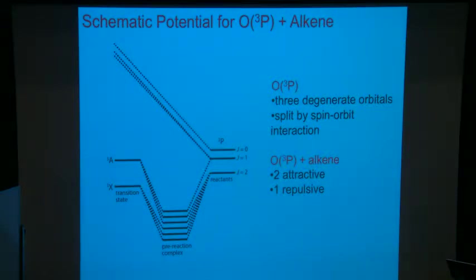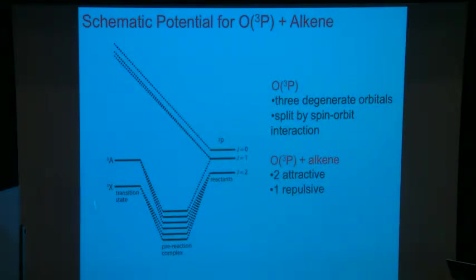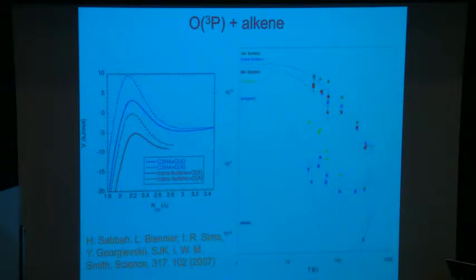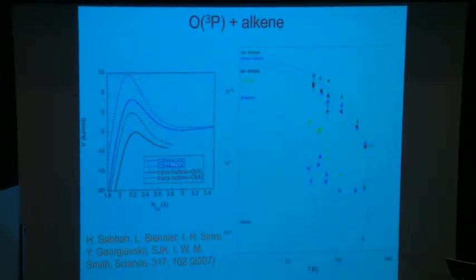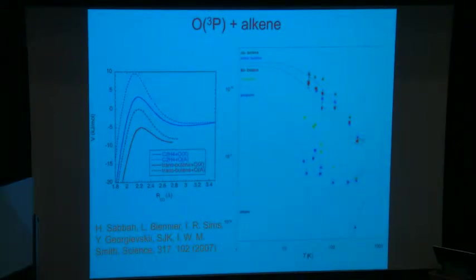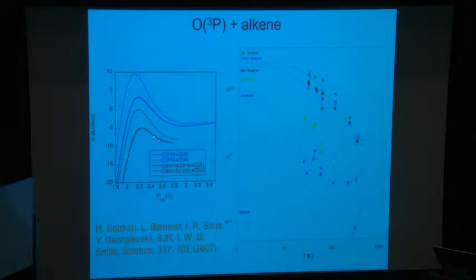We've got one X-state triplet (X in chemistry means ground state), an A-state as the first one above ground, and then the repulsive triplet. You have to account for all these degeneracies carefully to properly calculate the rate constant. This more quantitative picture shows our two attractive states — we don't care about the repulsive one, which contributes zero to the rate. The solid curves are ground states: red for butene, blue for ethylene; dashed curves are first excited states for each. For butene we're slightly submerged; for ethylene we're slightly above threshold.